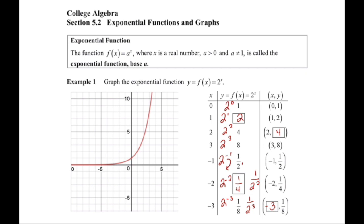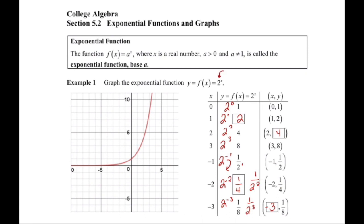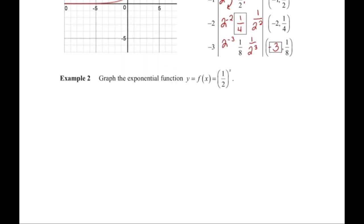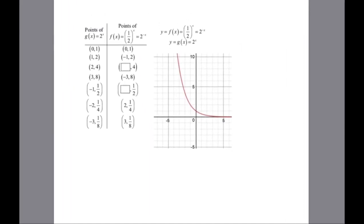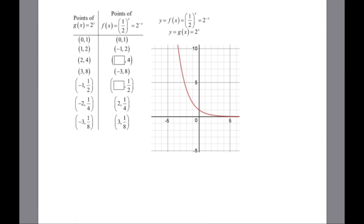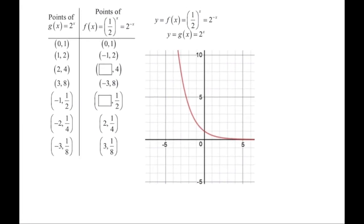Now what is the difference if our base is a nice whole number versus a fraction? I have f(x) = (1/2)^x. Note that (1/2)^x is the exact same as 2^(-x), because we have 1^x over 2^x, and 1 to any power is still 1. So bringing it to the numerator, we have 2^(-x). How does 2^(-x) compare with 2^x that we just had?